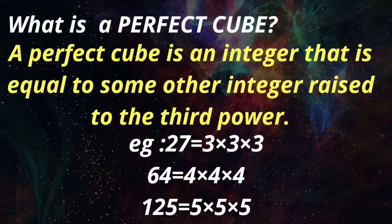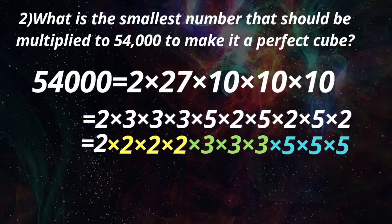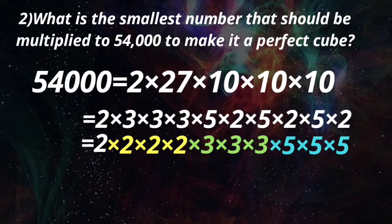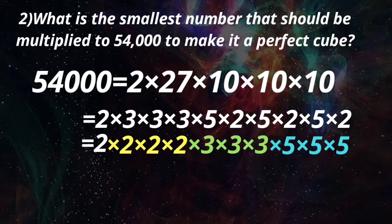The number given in this question is 54,000. It can be prime factorized as 2 x 3 x 3 x 3 x 5 x 2 x 5 x 2 x 5 x 2. Let's arrange it and try to make sets of 3 equal numbers. For making a perfect cube, we have 3 twos, 3 threes, and 3 fives in groups.